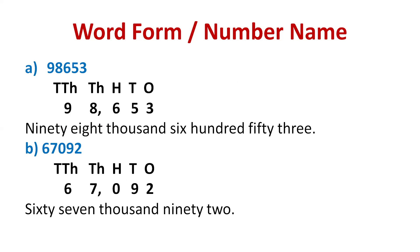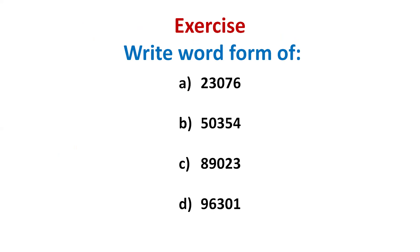Now it's your time to do some workout. Pause the video and solve them, then answer in the comment section and I'll check the answers later. The first one is 2, 3, 0, 7, 6. Remember: write the places above the digits, starting with six — ones; seven — tens; zero — hundreds; three — thousands; two — ten thousands. You'll write twenty-three thousand something. Be careful — I have inserted zeros, so be careful while writing the answer.